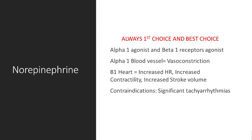When can you not use norepinephrine? When your patient is significantly tachycardic or having a tachyarrhythmia along with the shock — say heart rate of 130, 140, 150, or atrial fibrillation with rapid ventricular response. For these patients, you do not want beta-1 stimulation. Instead, you pick a drug that works only on alpha-1 receptors. If the patient has significant tachyarrhythmia with shock, you would not use norepinephrine; otherwise, it is always your first choice.